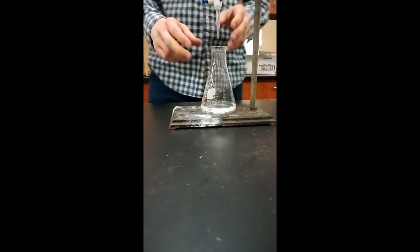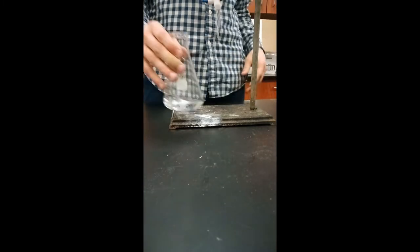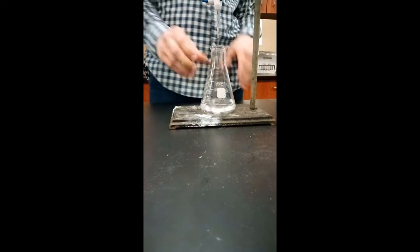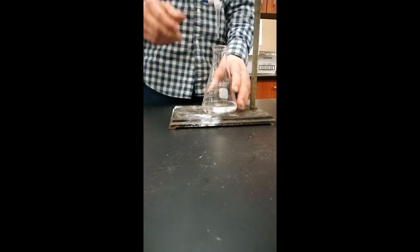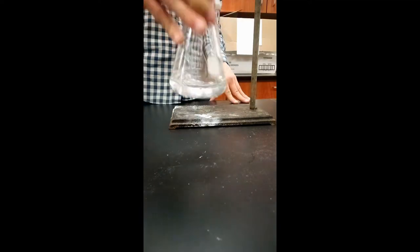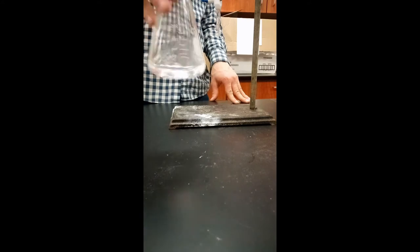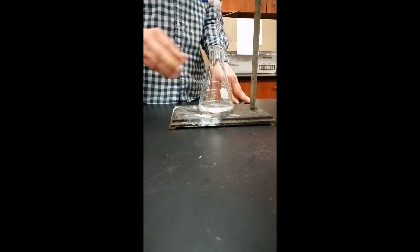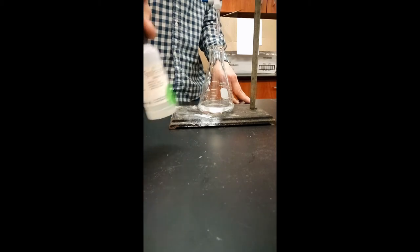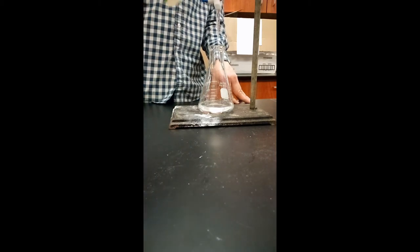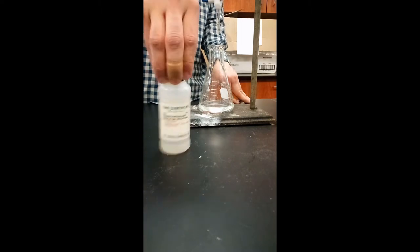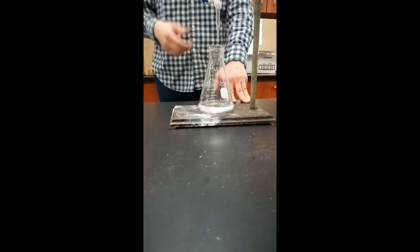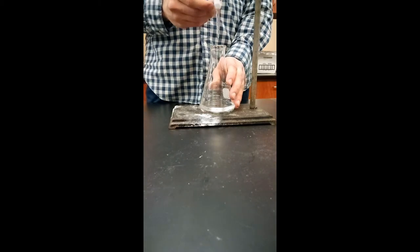We then should be able to take this solution with the phenolphthalein drops in it and add small amounts of the strong base until we see a faint light pink color persist in our Erlenmeyer flask. The color will come because we used the phenolphthalein indicator, so the color will exist once we add the appropriate amount of sodium hydroxide to it.